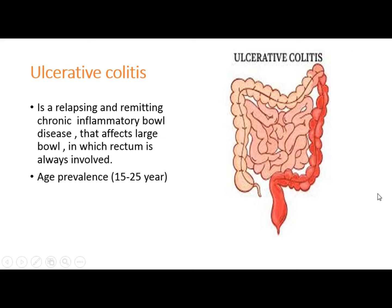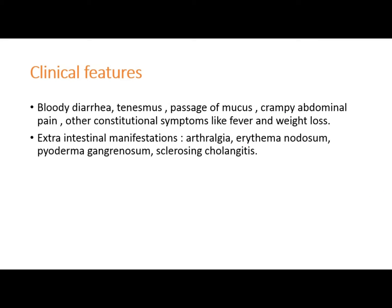Starting with the definition: ulcerative colitis is a relapsing chronic inflammation of the colon. It affects just the colon, not the whole GI tract like Crohn's disease, which can affect any part from the mouth to the anus. In ulcerative colitis it typically affects the colon and starts from the rectum — the rectum is always involved. Age prevalence is between 15 to 25 years, with another onset after 50 years.